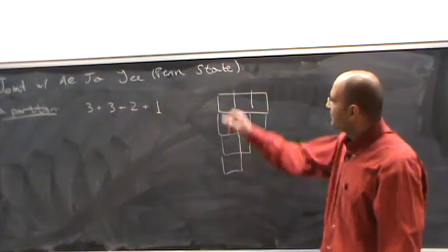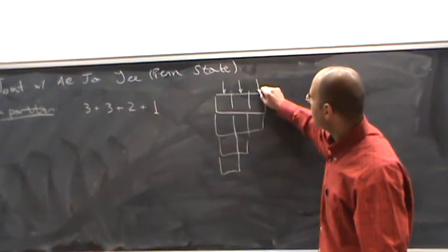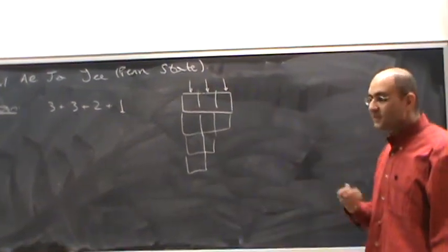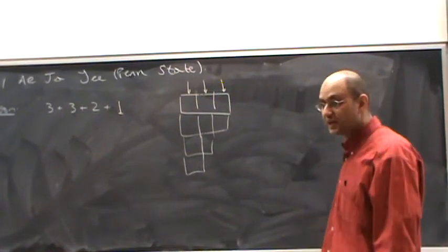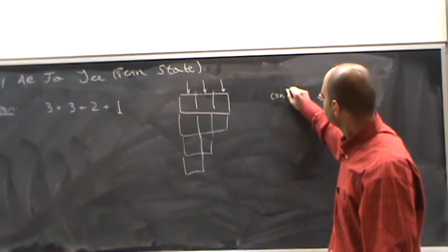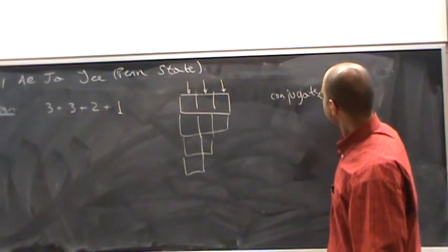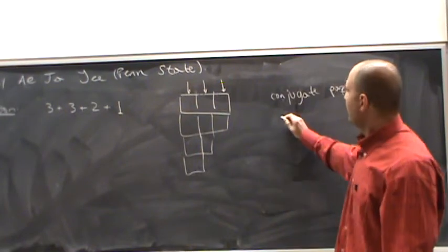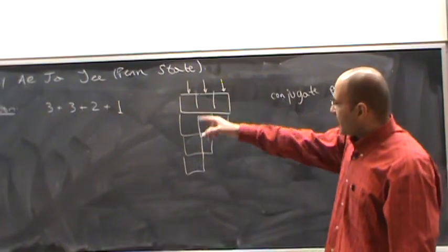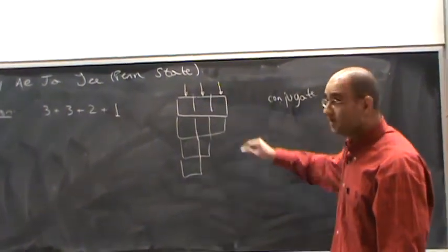If you read columns instead of rows, then we will get another partition, possibly another partition for the same integer. That's called the conjugate. So the conjugate of that one is 4 plus 3 plus 2.